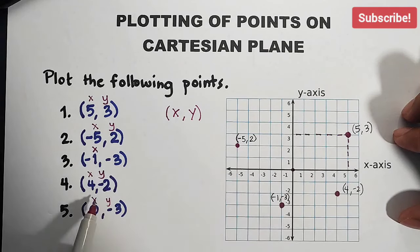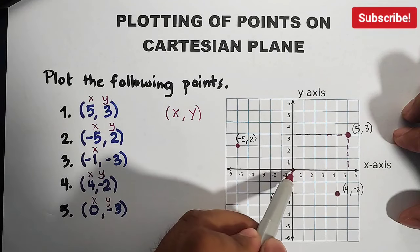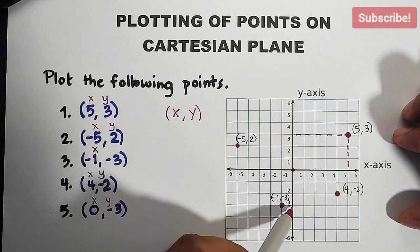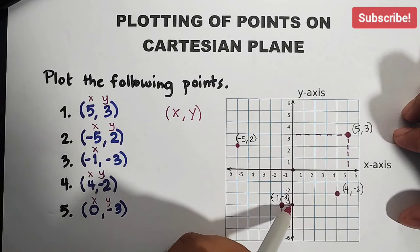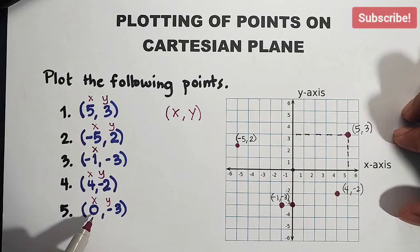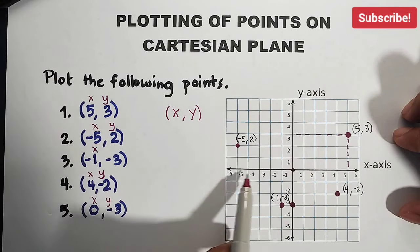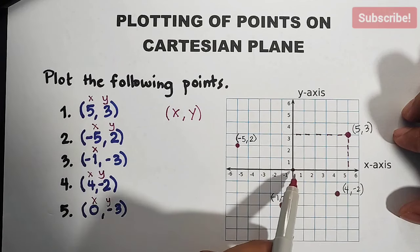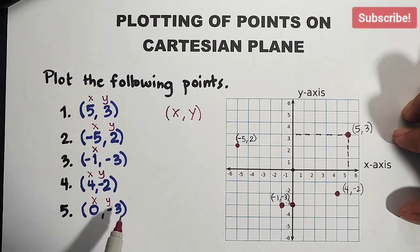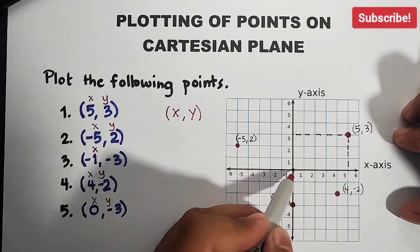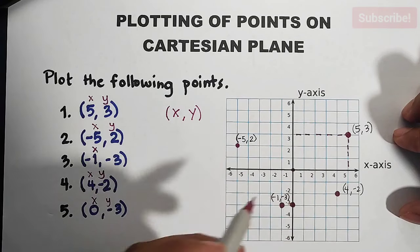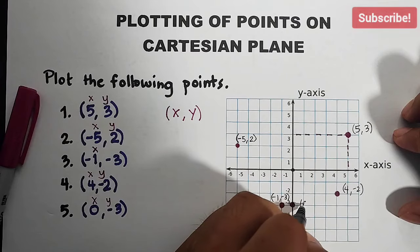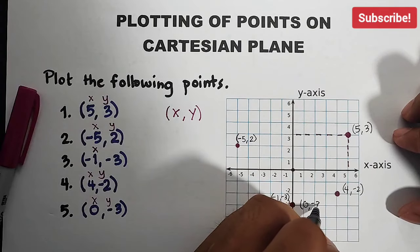Now, our y is negative 3. We will go down 3 units. 1, 2, and 3, until we reach negative 3. This is the point. So sir, how again? Your x is 0, x-axis. Start here, in the middle, because that's 0, on the x-axis. Then, since your y is negative 3, you will go down 3 units. 1, 2, and 3. And here is the location of (0, -3).